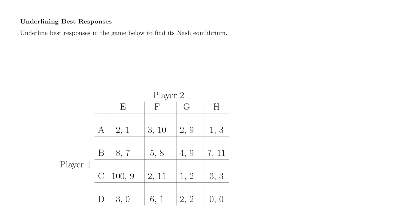First, we'll identify Player 2's best responses to each of Player 1's strategies. When Player 1 plays A, Player 2's best response is F, since 10 is greater than 1, 9, and 3. When Player 1 plays B, Player 2's best response is H, since 11 is greater than 7, 8, and 9. When Player 1 plays C, Player 2's best response is F, since 11 is greater than 9, 2, and 3. When Player 1 plays D, Player 2's best response is G, since 2 is greater than 0, 1, and 0. We've now found Player 2's best responses to each of Player 1's strategies.